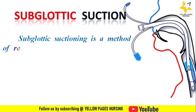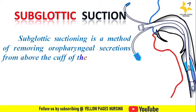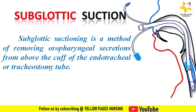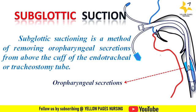Subglottic suctioning is a method of removing oropharyngeal secretions from above the cuff of the endotracheal or tracheostomy tube. As seen in this image, oropharyngeal secretions accumulate above the cuff. The endotracheal tube prevents glottic closure, so the patient is unable to cough and remove the secretions naturally, resulting in pooling of secretions above the cuff.